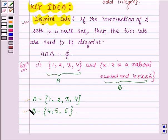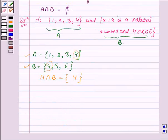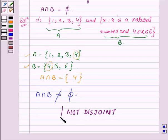Now to check whether A and B are disjoint, we will have to first find A intersection B. A intersection B will have all those elements which are common to both A and B, and the common element here is 4. This implies that A intersection B is not a null set, and hence A and B are not disjoint. That is, the given pair is not disjoint.